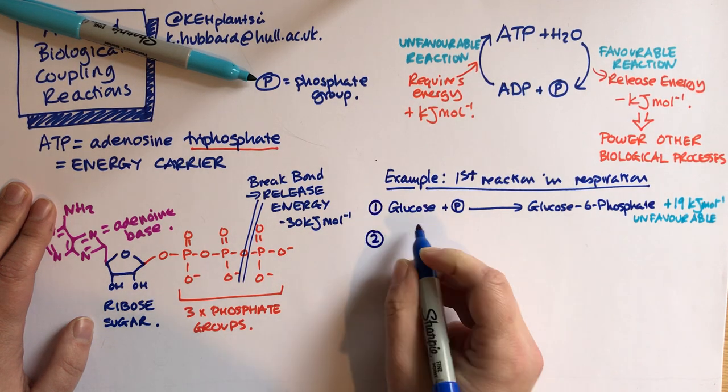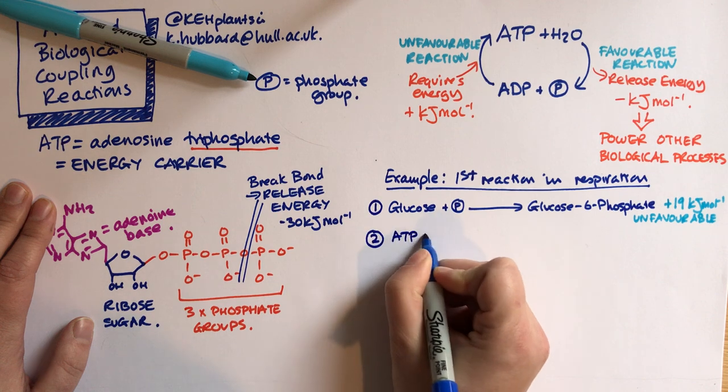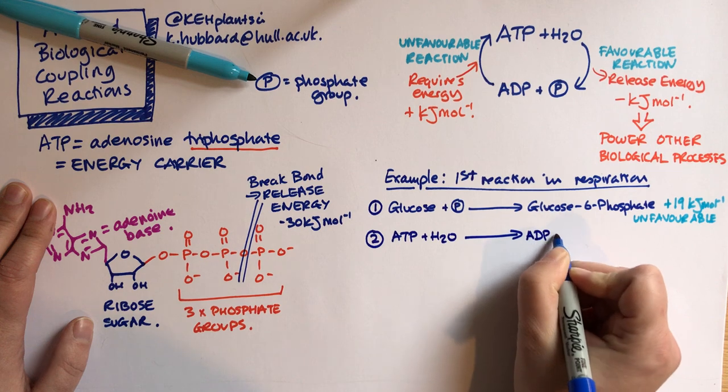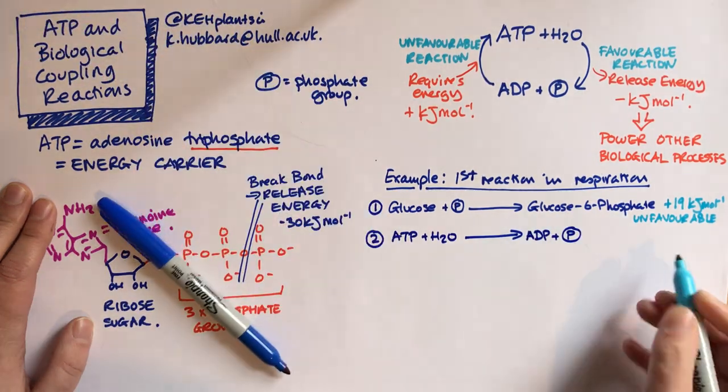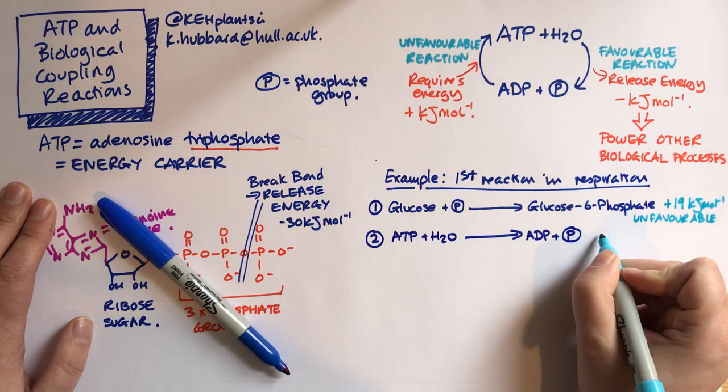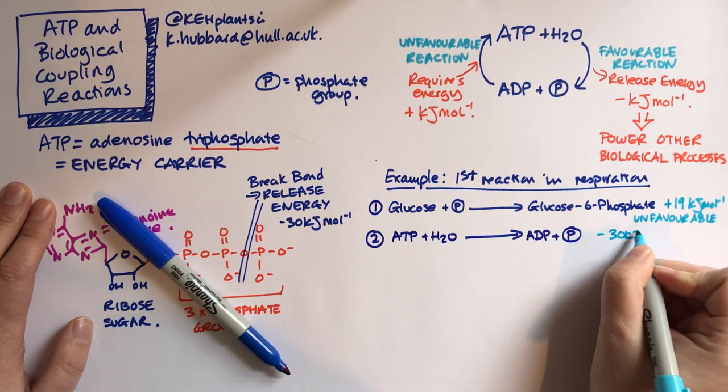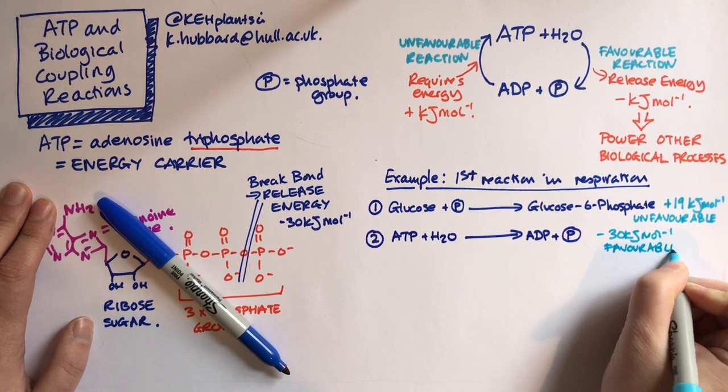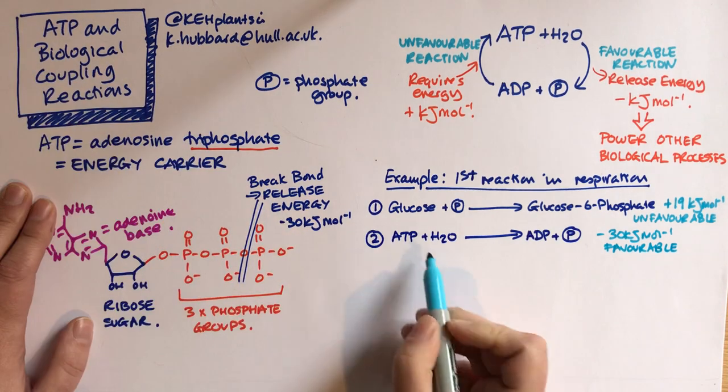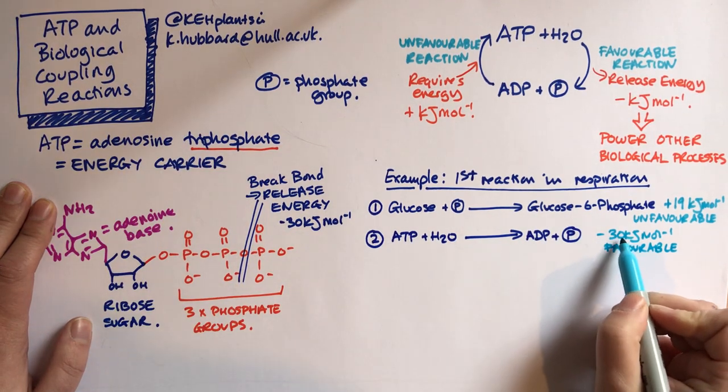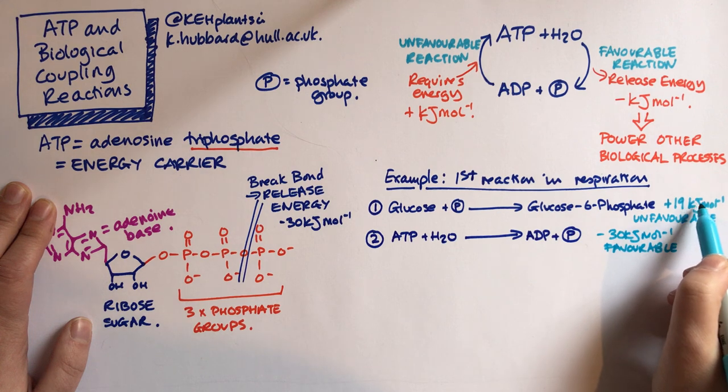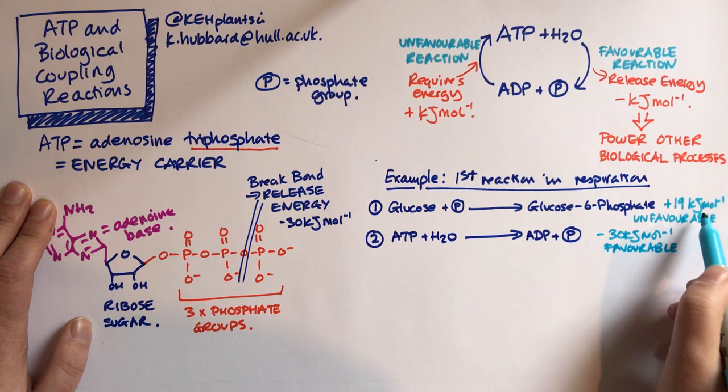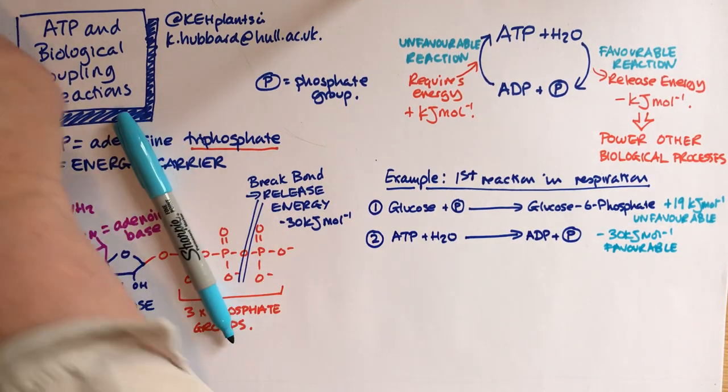But we know we've got a second reaction where ATP plus water can go to ADP plus phosphate. And we know that that releases energy, 30 kilojoules, and that is favourable. So this second reaction, the ATP reaction, has released 30 kilojoules per mole. We need 19 kilojoules in order for the first reaction to happen. So there's more energy released than we need to make the first reaction happen.